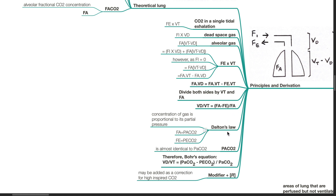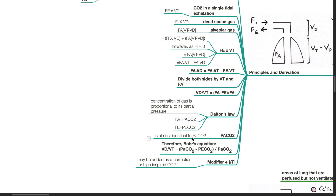By Dalton's law, the concentration of a gas is proportional to its partial pressure. Therefore, Fa equals PaCO₂ and Fe equals PeCO₂. Since the partial pressure of arterial CO₂ can approximate alveolar partial pressure of CO₂, Bohr's equation becomes: Vd / Vt = (PaCO₂ − PeCO₂) / PaCO₂. A modifier '+R' may be added as a correction for high inspired carbon dioxide.